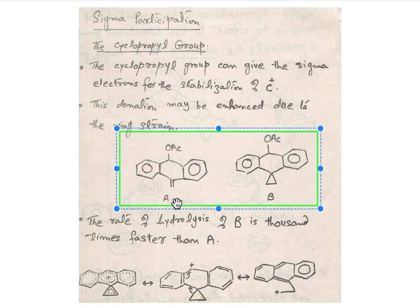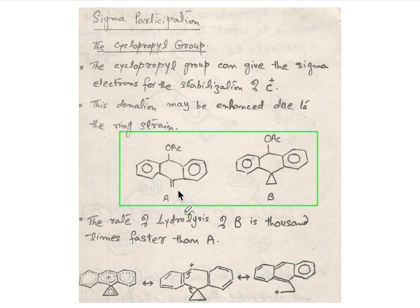Two compounds, compound number A and compound number B, with similar structure with few differences. Like in compound A, we have ethylene group, ethylene group at position number 9.